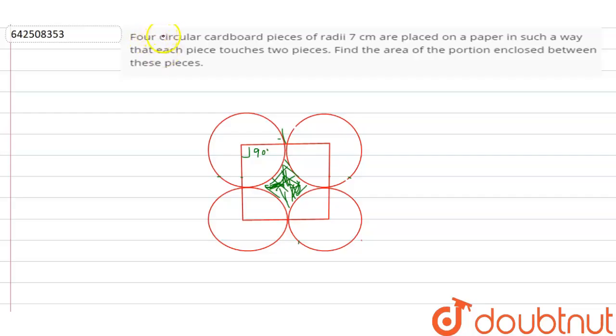Four circular cardboard pieces of radii 7 cm are placed on a paper in such a way that each piece touches two pieces. Find the area of the portion enclosed between these pieces. Now we need to find this area.